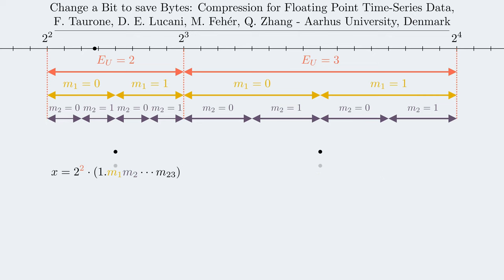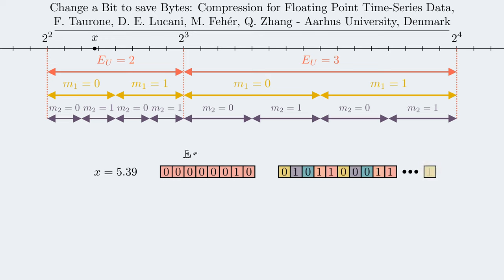We can see how moving the number along the axis makes the exponent and mantissa bits change accordingly.